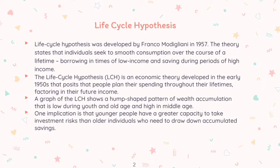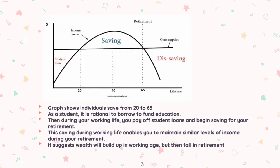This is a graph of the Life-Cycle Hypothesis — a graph of wealth accumulation. The graph represents an inverted curve shape. It shows lifetime on the X axis, and income in dollars on the Y axis.